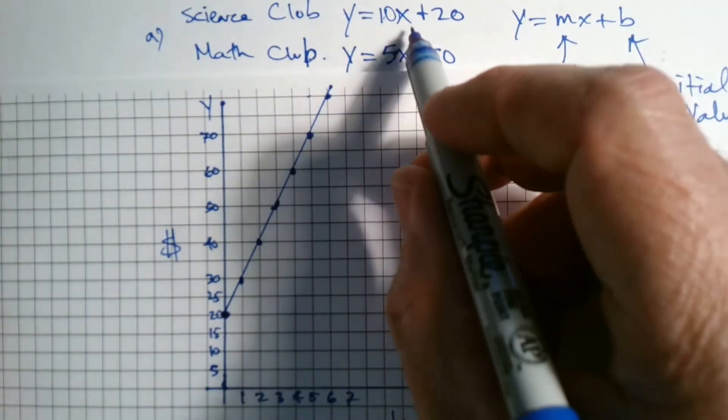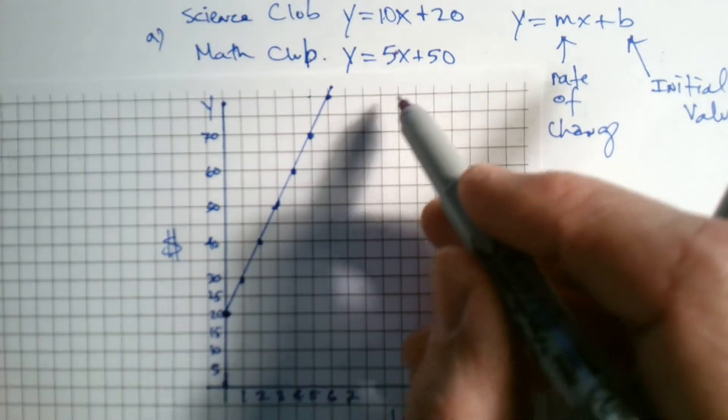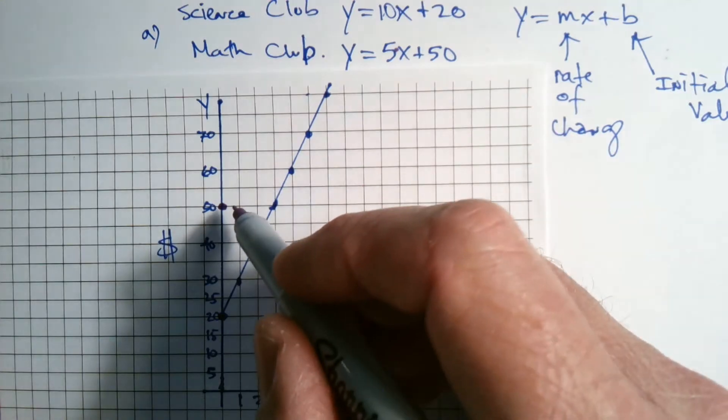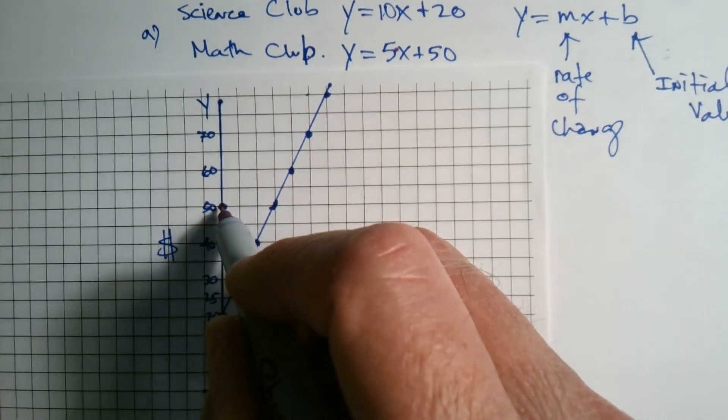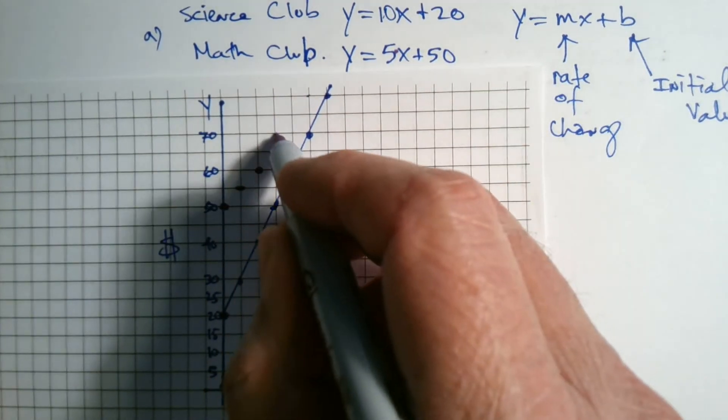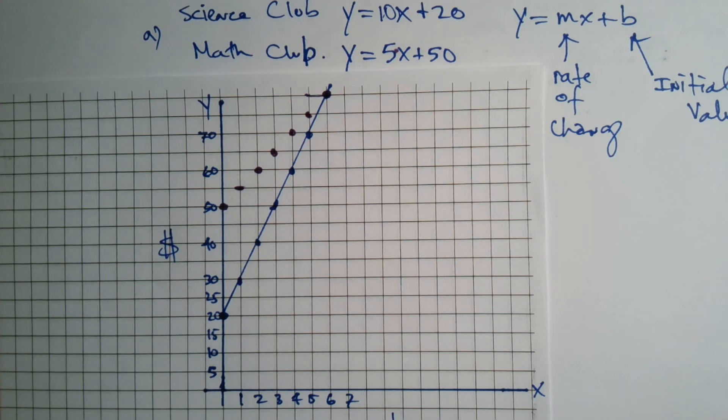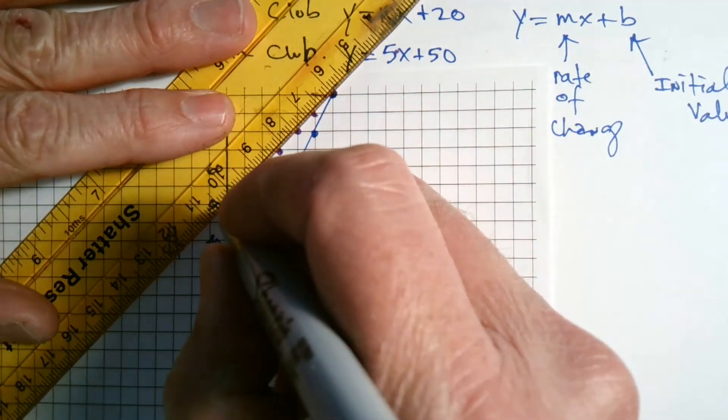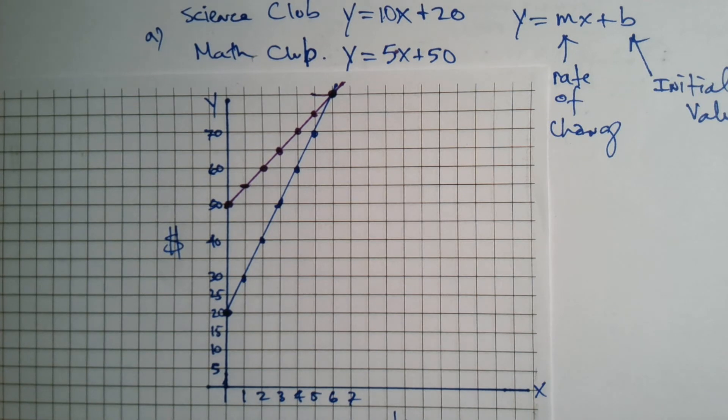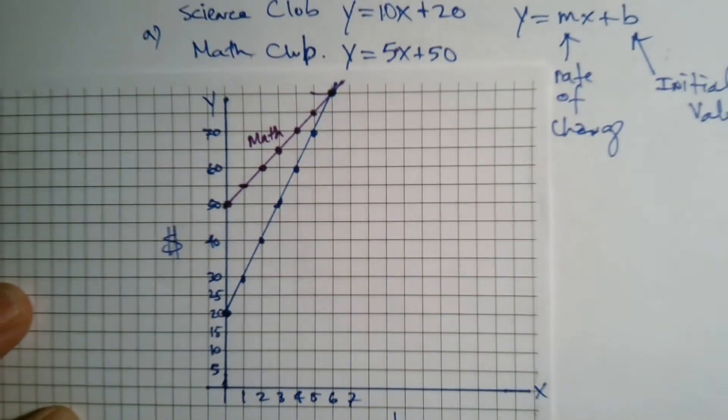And then with the math club, my math club starts at $50. But it only increases 5 every week. So it goes up 5 every week. 5 on that week, then 5 again, then 5 up that week, 5 on that week, and 5 on that week, and then 5 on this week there. So my trend line is not as steep because the rate is less, so of course it's not going to be as steep. So there's that trend line.